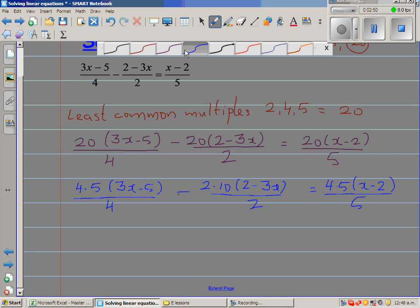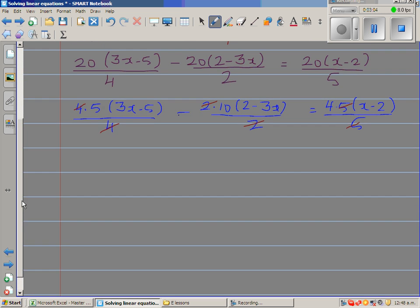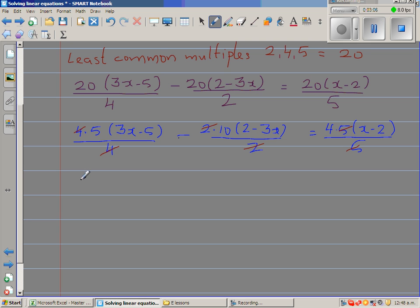So here I am going to cancel. What can I cancel? I can cancel this 4 and 4, cancel this 2 and 2, this 5 and 5. So what remains is you have eliminated a denominator. So this changes to 5 times 3x minus 5 minus 10 times 2 minus 3x is equal to 4 times x minus 2. So this has become a simple linear equation.